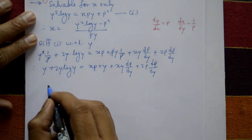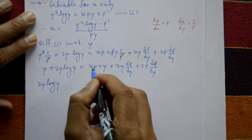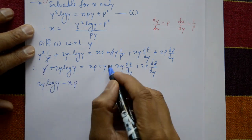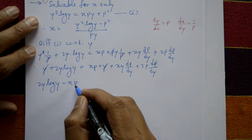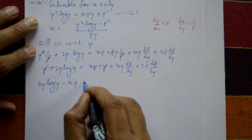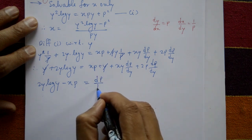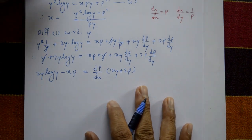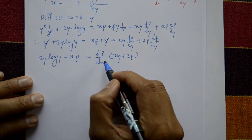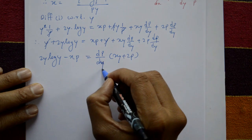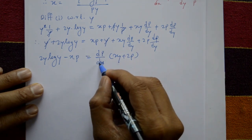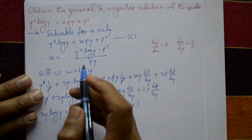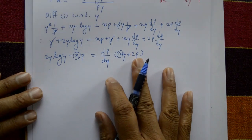Shifting terms to the left: 2y log(y) − xp − y. The +y and −y terms cancel on both sides. So −2y log(y) − xp equals (xy + 2p) · dp/dy. Separating variables gives dp/p and dy/y, but x remains — so eliminate x by substituting its value from equation one.